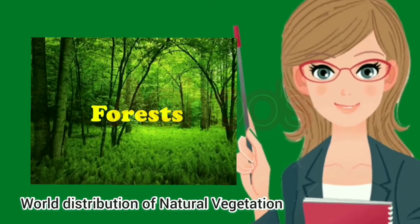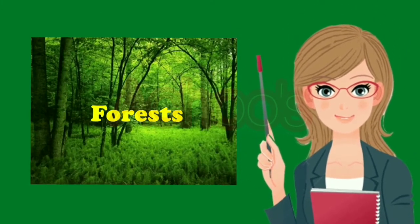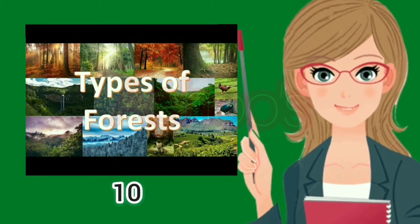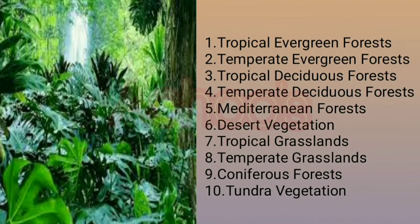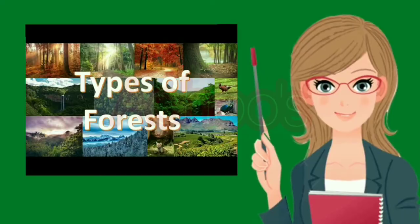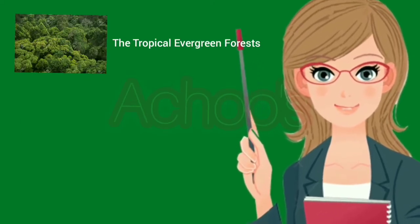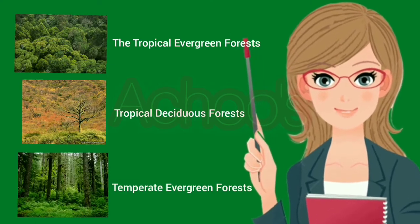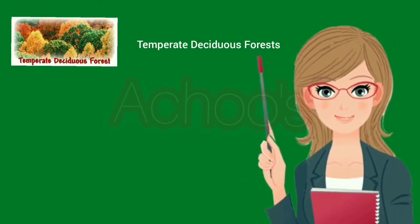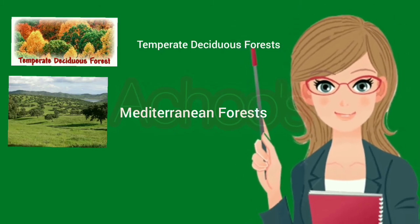Now let us learn about the world distribution of natural vegetation. Here, it is divided into 10 types: tropical evergreen forests, temperate evergreen forests, tropical deciduous forests, temperate deciduous forests, Mediterranean forests, desert vegetation, tropical grasslands, temperate grasslands, coniferous forests, and tundra vegetation. But in this session, we are learning about six types: tropical evergreen forests, tropical deciduous forests, temperate deciduous forests, Mediterranean forests, and coniferous forests.